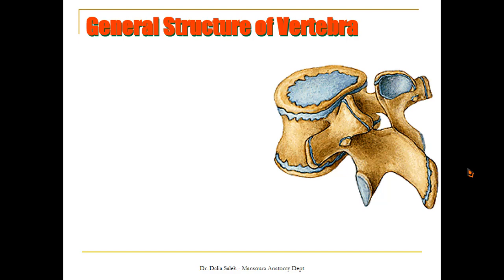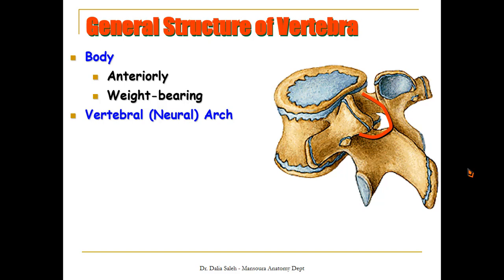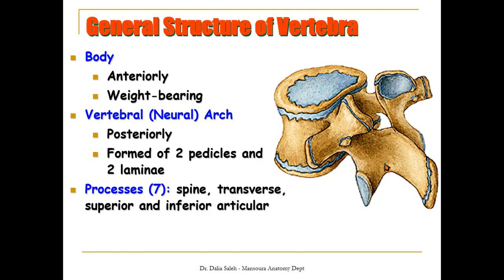To remind you of the general structure of the vertebra: we have a body, which is a mass of bone lying anteriorly — it is the weight-bearing region. Its shape differs from region to region, being smallest in the cervical region and largest in the lumbar region. Posterior to the body we have the neural arch, made by two pedicles and two laminae. From the vertebra extend seven processes: the spine lies posteriorly, and its shape and size differs by region.